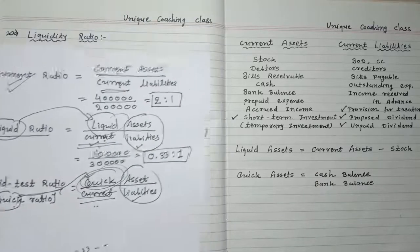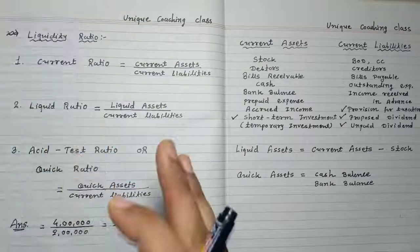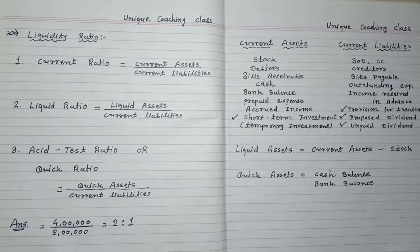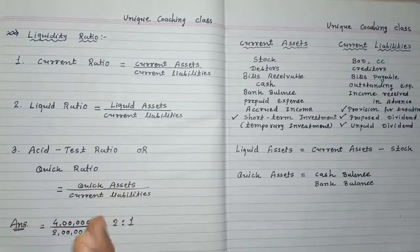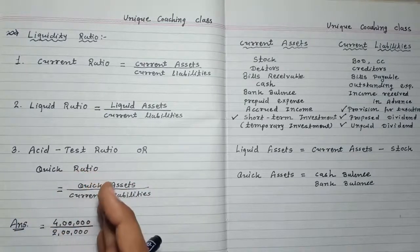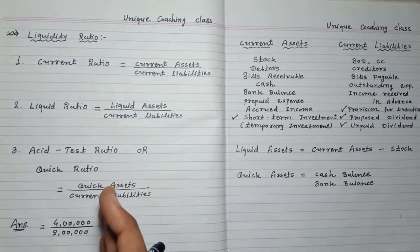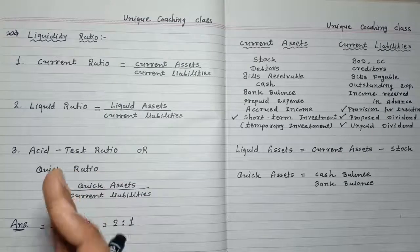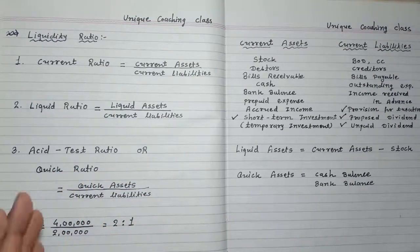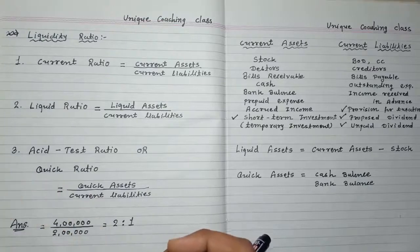Our liquidity ratio topic is now also completed. In this chapter, we have completed two parts: profitability ratios with 9 formulas, and liquidity ratios with 3 formulas — a total of 12 formulas completed. There are still around 10 to 12 formulas remaining, which we will cover in the next video.